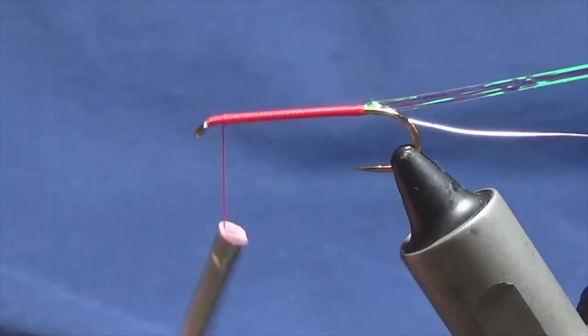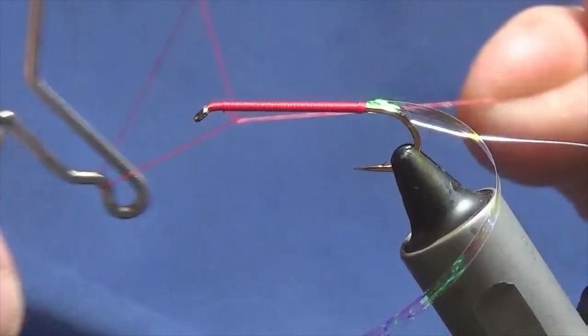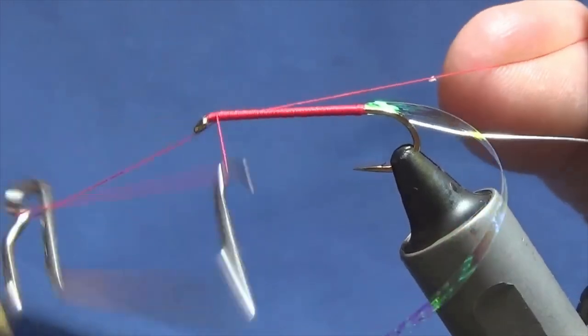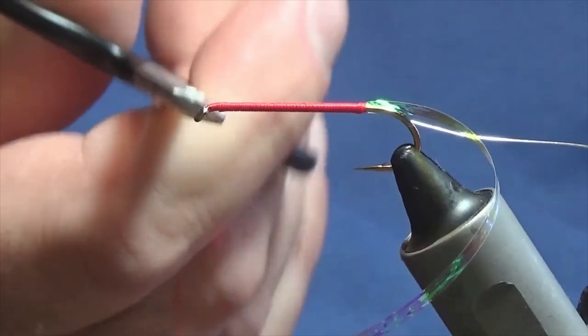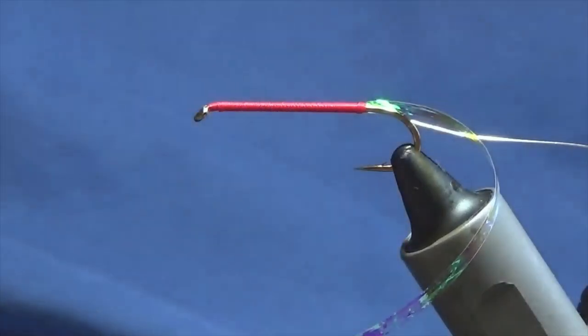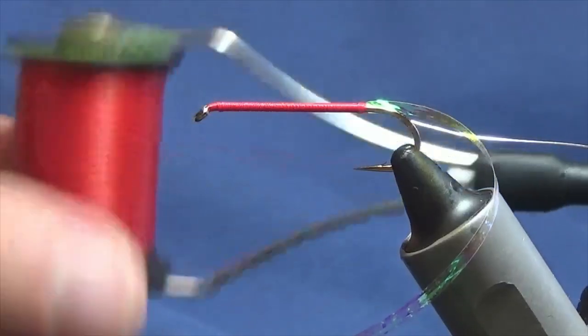I'm just going to bring it up within a head length. Now what I'm going to do here is whip finish off the Glo-Brite floss, trim that away. And to finish the fly off, I'm going to come in with a Uni-Thread 8/0 red.